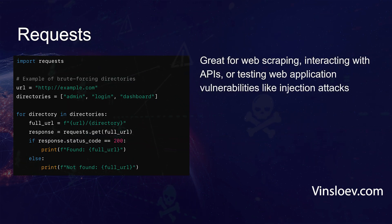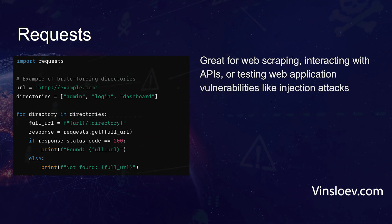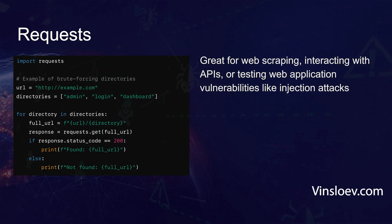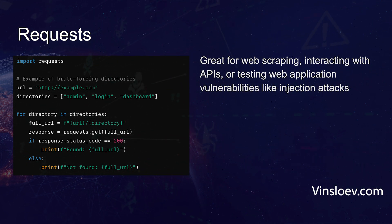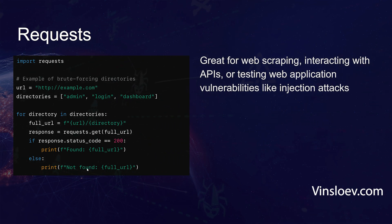Second off is Requests. This one is quite popular, and I guess most of you have dealt with this before when making Python scripts. Basically, it's a library for making HTTP requests, typically used in APIs or other calls where you use Python to call a resource on the internet. Here we are simply making a GET request to a given website to see which directories are available on that particular host — brute-forcing through a list of directories like admin, login, and dashboard to see if these are available on the given URL.